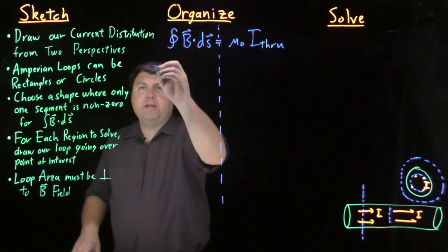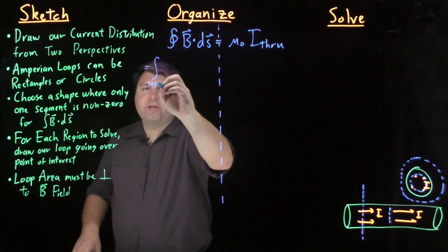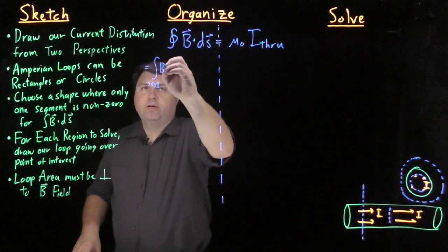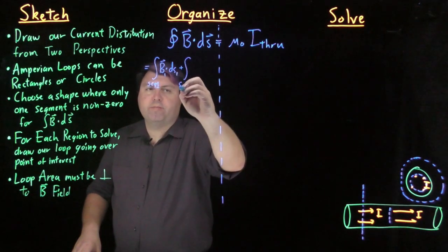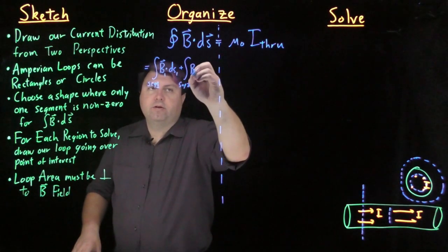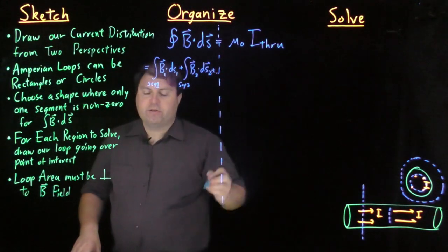So for our B dot ds, on this side, this is equal to over segment one, B1 dot ds1 plus over segment two, B2 dot ds2, and so on and so forth.